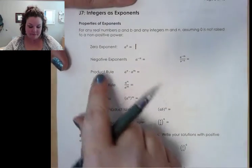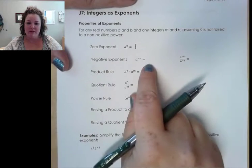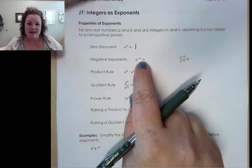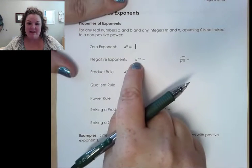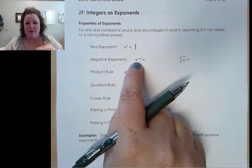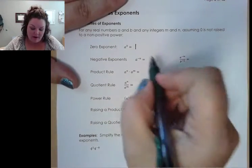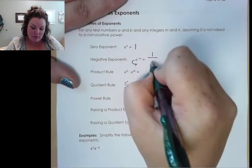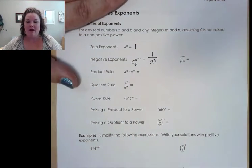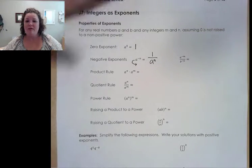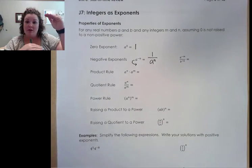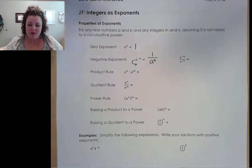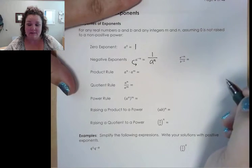The second one is our negative exponent rule, which says we can get rid of a negative exponent by moving it across the fraction line. So right now, a to the negative n — there's no fraction, no denominator, so that would just be over one. If I want to take this and move it down into the denominator, I would end up with one over a to the n power. So if we have negative exponents on the top or on the bottom, we can move them across the fraction line in order to change the sign of the exponent.